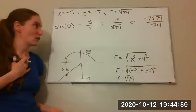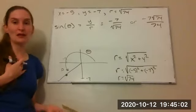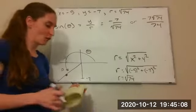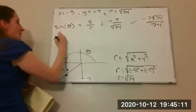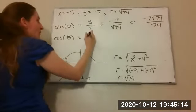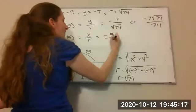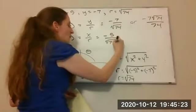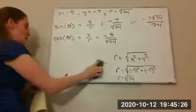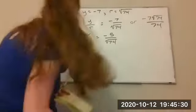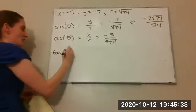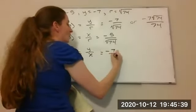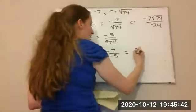Cosine theta is x over r, so that's negative 5 over square root of 74. Again, I could rationalize the denominator if needed, but I'm not going to do that for this one — just know that you can if you have to. Tangent is y over x, so I get negative 7 over negative 5, which equals 7 fifths.